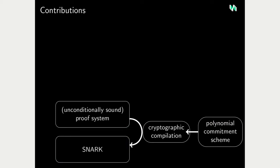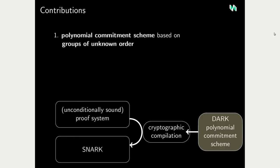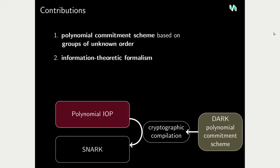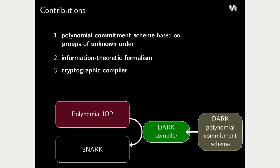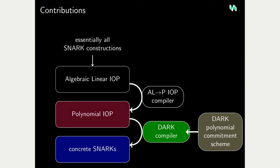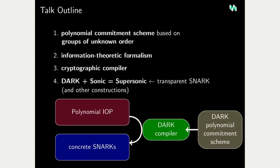Let's focus on the bottom end of this compilation pipeline to illustrate where our contributions are situated. We propose a new polynomial commitment scheme based on groups of unknown order. We propose an information-theoretic formalism for abstract protocols amenable to instantiation with a polynomial commitment scheme—we call this a polynomial IOP—and we propose a compiler to transform polynomial IOPs using our dark polynomial commitment scheme into concrete SNARKs. In the interest of time, my presentation will focus only on the colored blocks: the polynomial commitment scheme based on groups of unknown order.